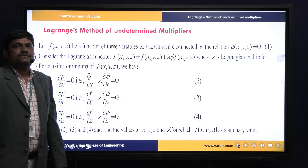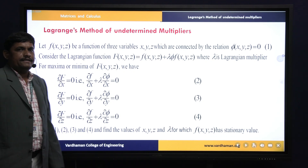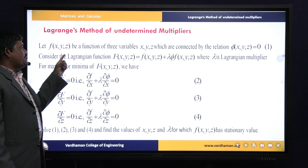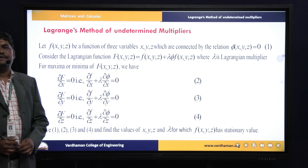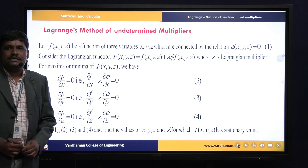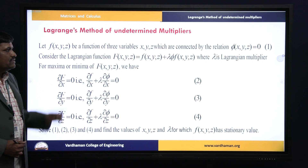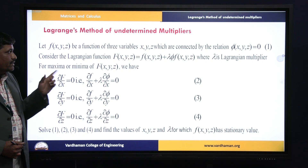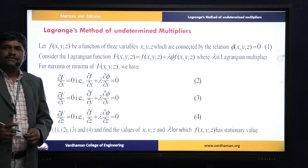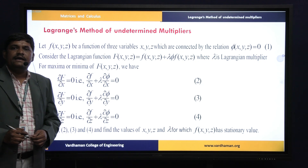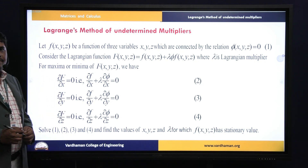There is a process to work on this method. Let f(x, y, z) be a function of three variables x, y, z, which are connected by a relation φ(x, y, z) = 0. Here, f(x, y, z) is the function and φ(x, y, z) is the condition. Then you can apply this method.